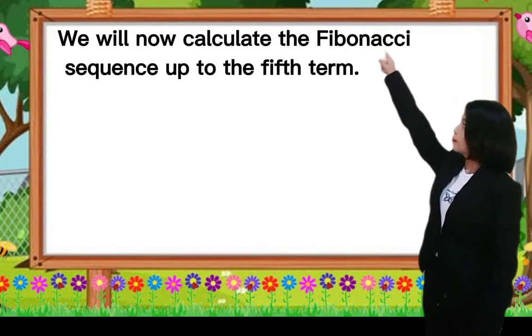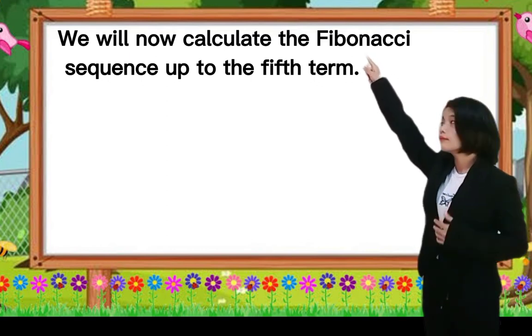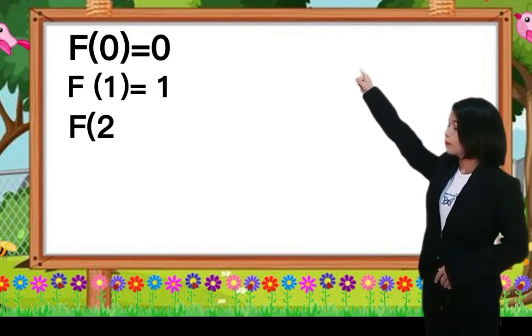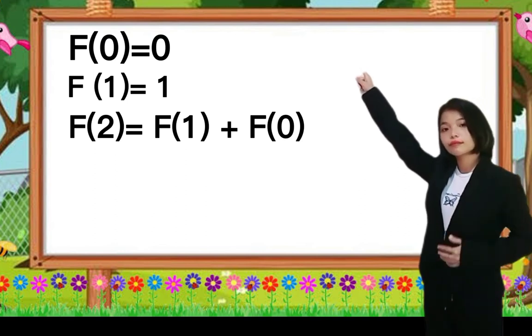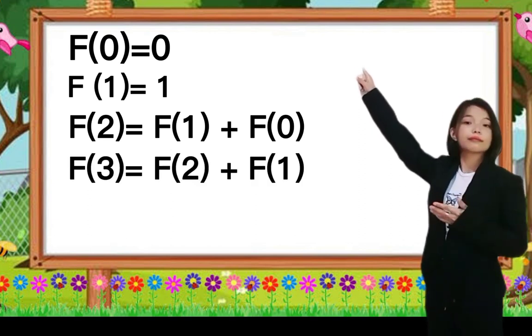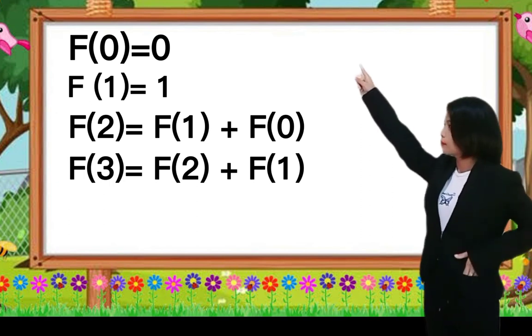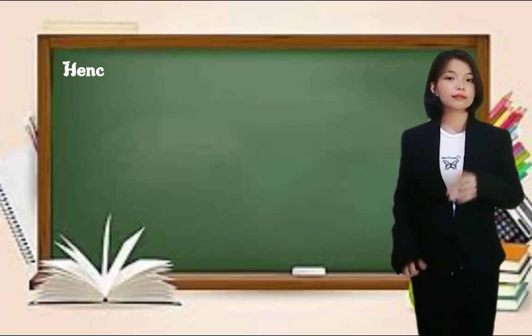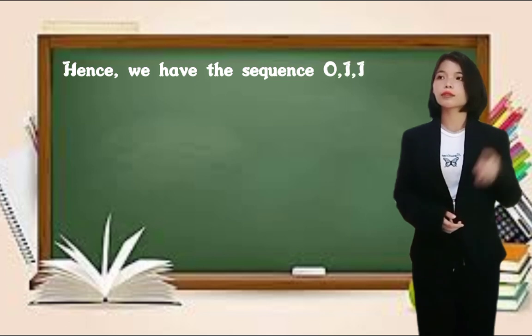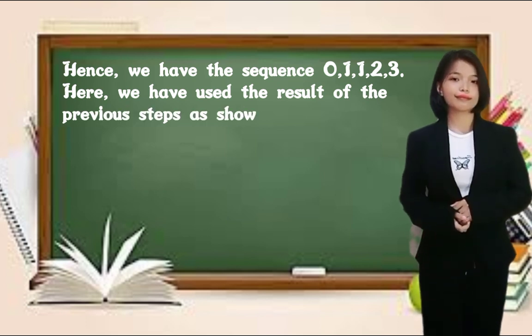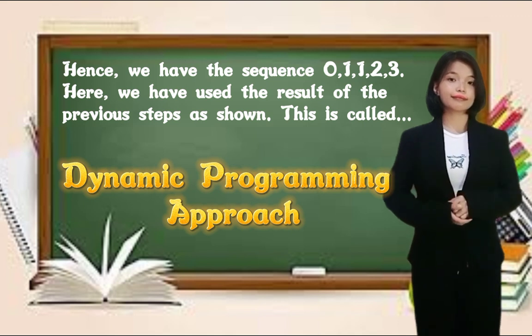We will now calculate the Fibonacci sequence up to the fifth term. The first term is 0. The second term is 1. The third term is the sum of 0 from step 1 and 1 from step 2, which is 1. The fourth term is the sum of the third term from step 3 and second term from step 2. Hence, we have the sequence 0, 1, 1, 2, 3. Here, we have used the results of the previous steps as shown. This is called Dynamic Programming Approach.